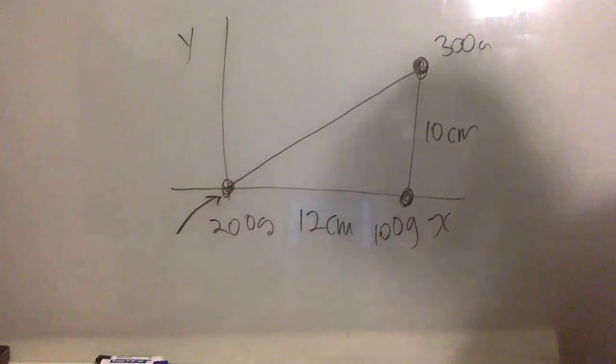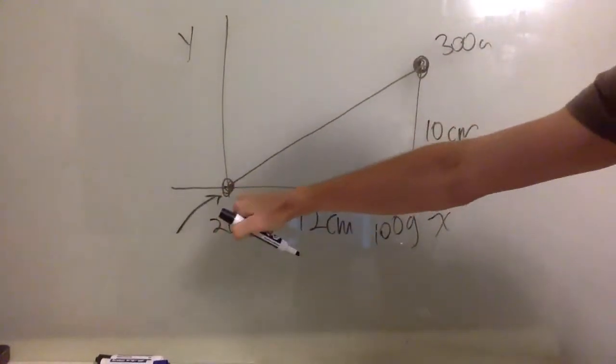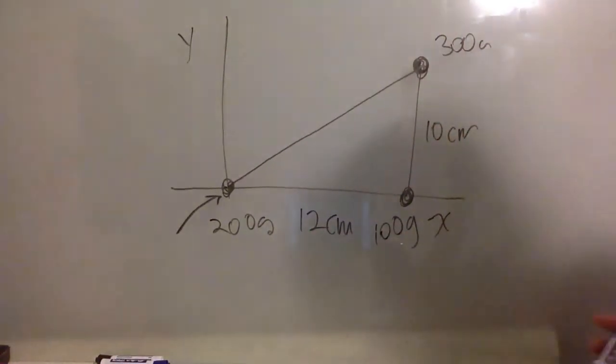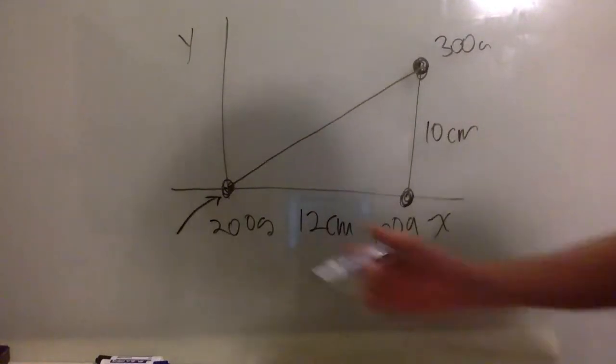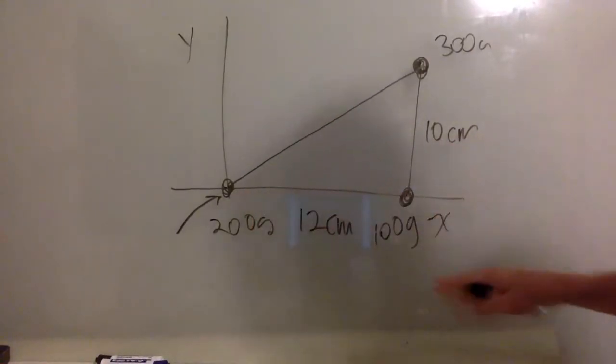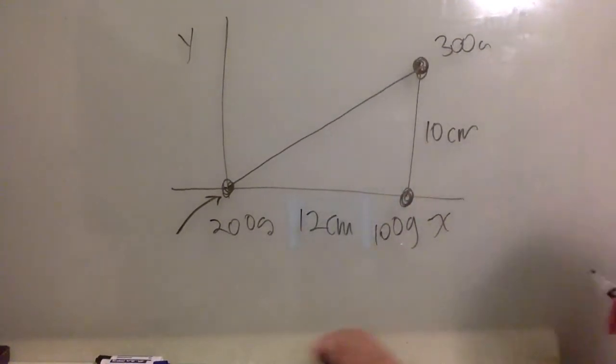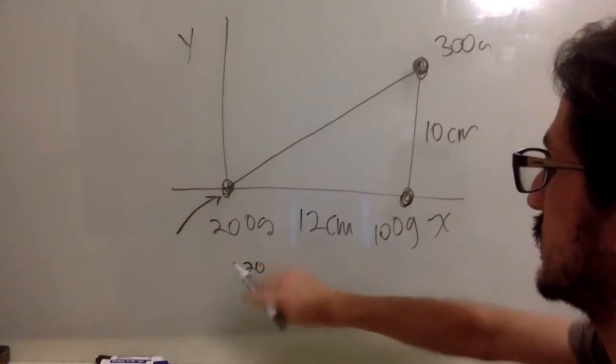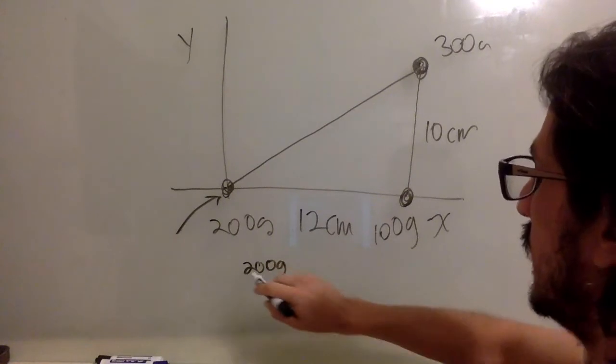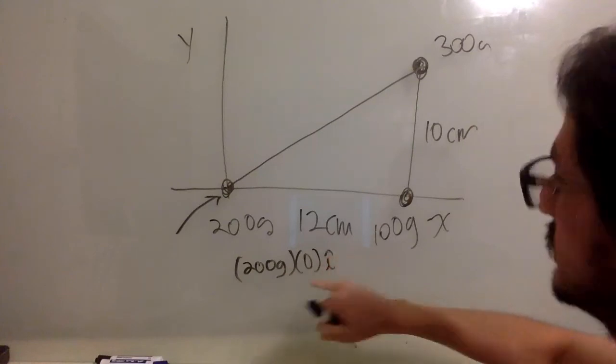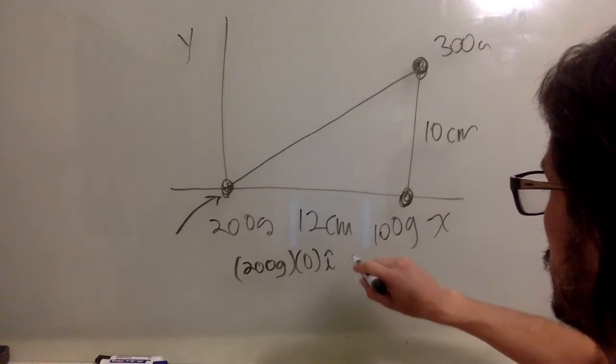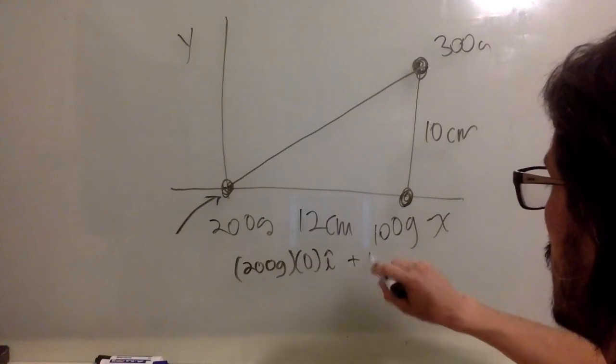Let's say that this is the 0, 0. So, the axes, y and x, vertical and horizontal axis, are independent. And that's why in the answer for this problem, you have an answer for x and an answer for y. So, what is the center of mass in x? Well, you have, let's say, 200 grams. That's zero in the i-direction. That's zero in the i-direction. Plus 100 grams.